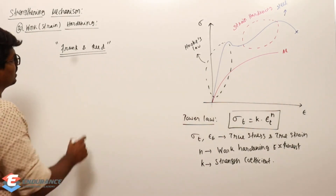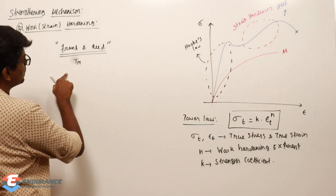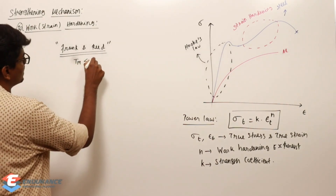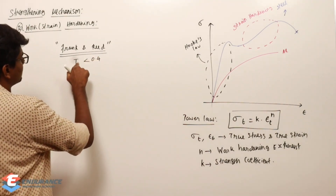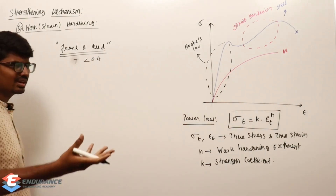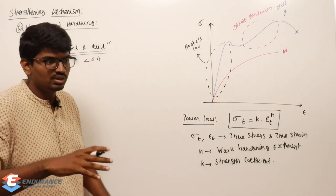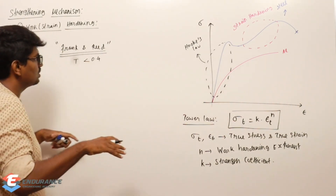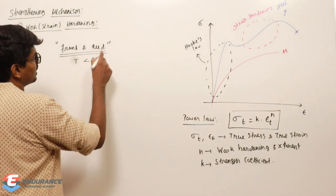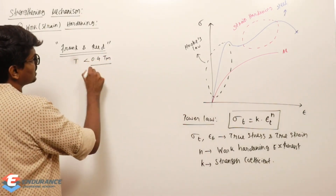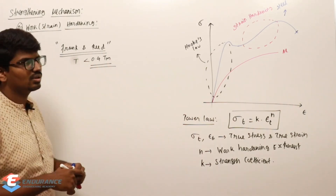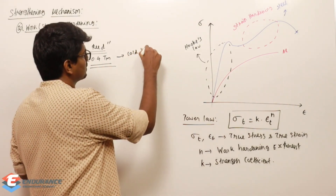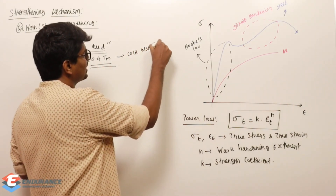What Frank and Read say is: if you take a material and cold work it — cold working or cold forming means deforming it below 0.4 times the melting point temperature — then something specific happens to the dislocations in that material.